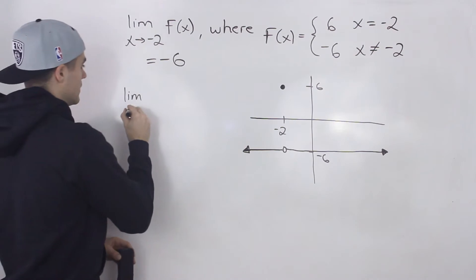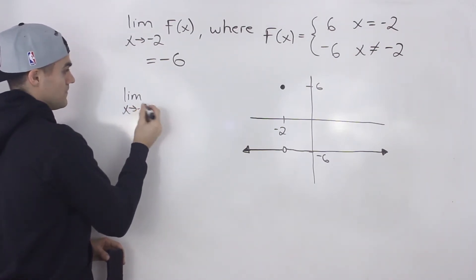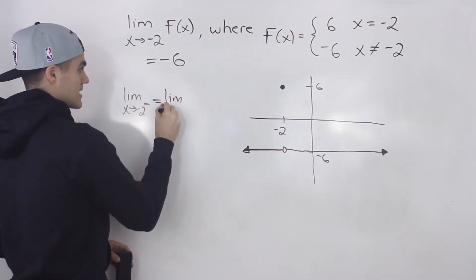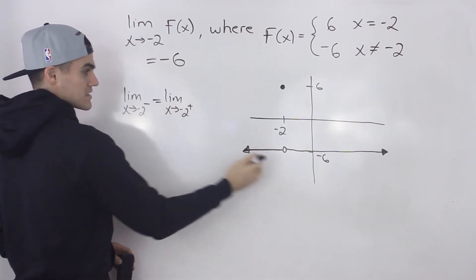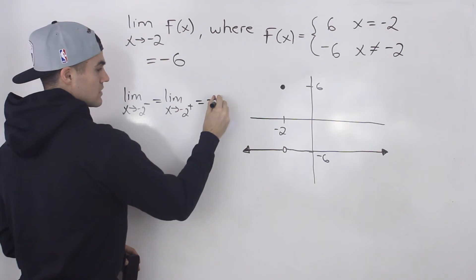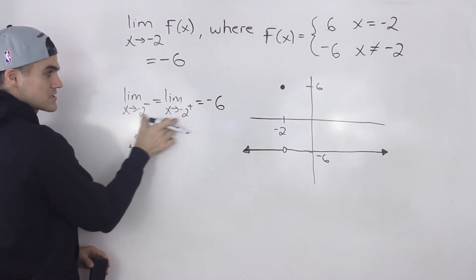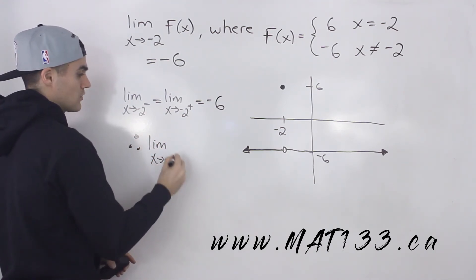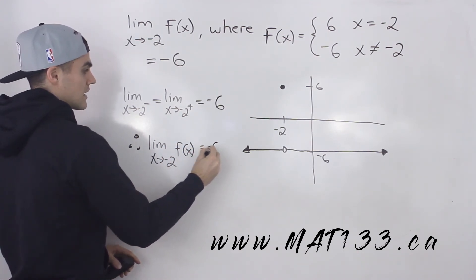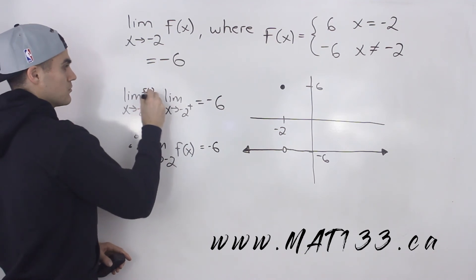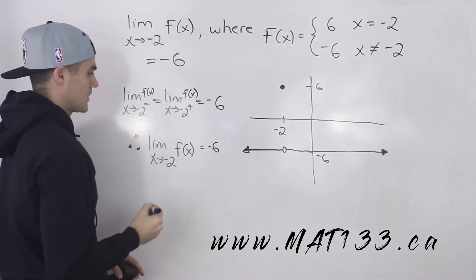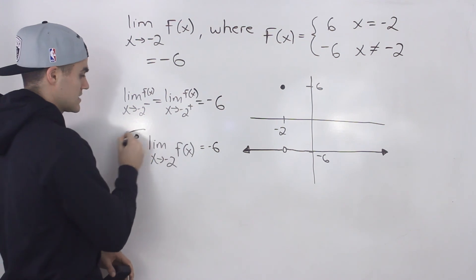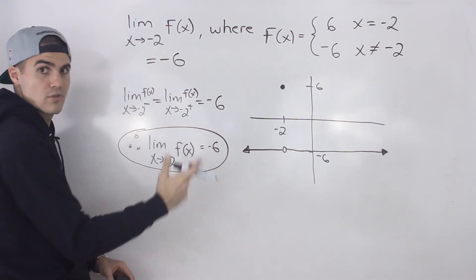If you were to write this in a nicer format, you would say the limit as x approaches negative 2 from the negative side of f of x is equal to the limit as x approaches negative 2 from the positive side of f of x, which is equal to negative 6. And therefore, because that limit is approaching that same y value from both sides, the limit as x approaches negative 2 in general of the function is equal to negative 6. Approaching the same y value from both sides, the limit exists, and it's equal to that y value.